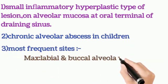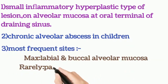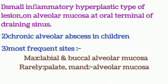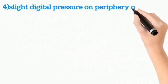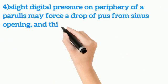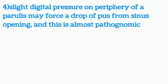The most frequent sites in the maxilla are labial and buccal alveolar mucosa, and rarely involved sites are the palate and mandibular alveolar mucosa. Slight digital pressure on the periphery of parulis may force a drop of pus from the sinus opening, and this is almost pathognomonic.